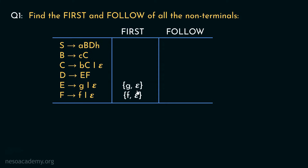Now coming to D, the production rule is D can be rewritten as uppercase E followed by uppercase F. To find the First of D, we need the First of E, which has the symbol g, so First of D definitely includes g. Since First of E also has epsilon, we substitute epsilon for E and then need First of F, which has lowercase f and epsilon. So First of D also includes f. And since both E and F can derive epsilon, D also derives epsilon — therefore First of D includes epsilon as well.